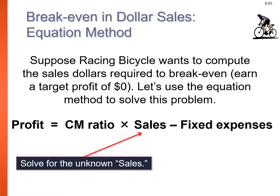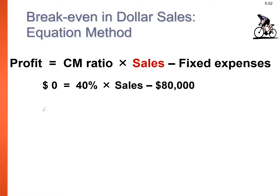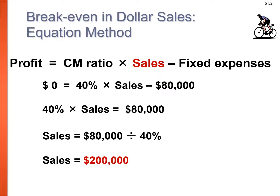To compute break-even in sales dollars using the equation method: profit = CM ratio × sales − fixed expenses. Setting profit to zero: 0 = 40% × sales − $80,000. Solving: 40% × sales = $80,000; sales = $80,000 ÷ 40% = $200,000. So the company needs $200,000 in sales to break even.